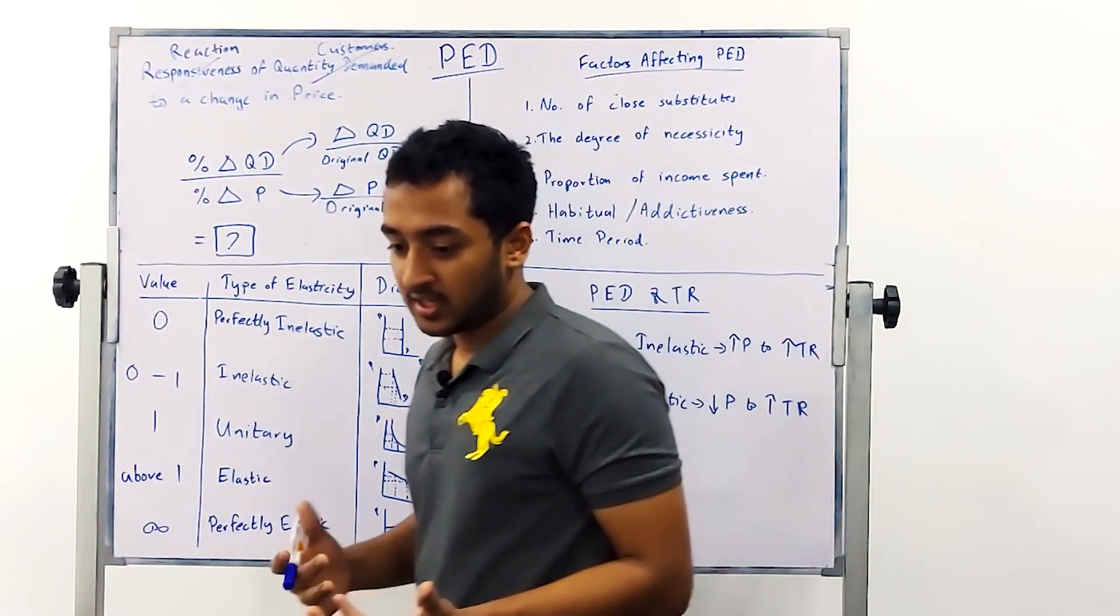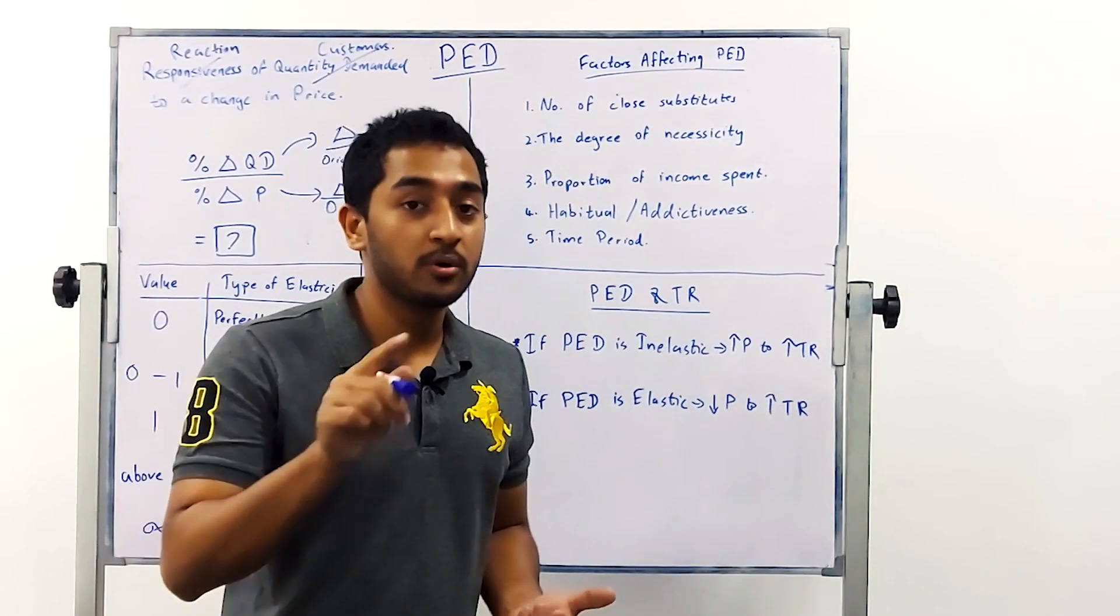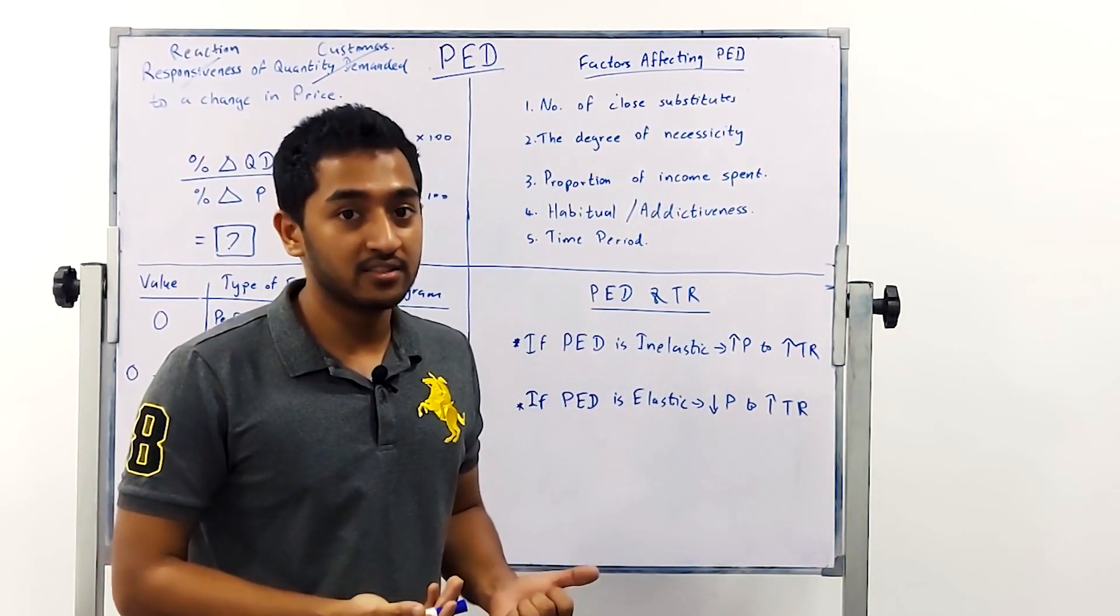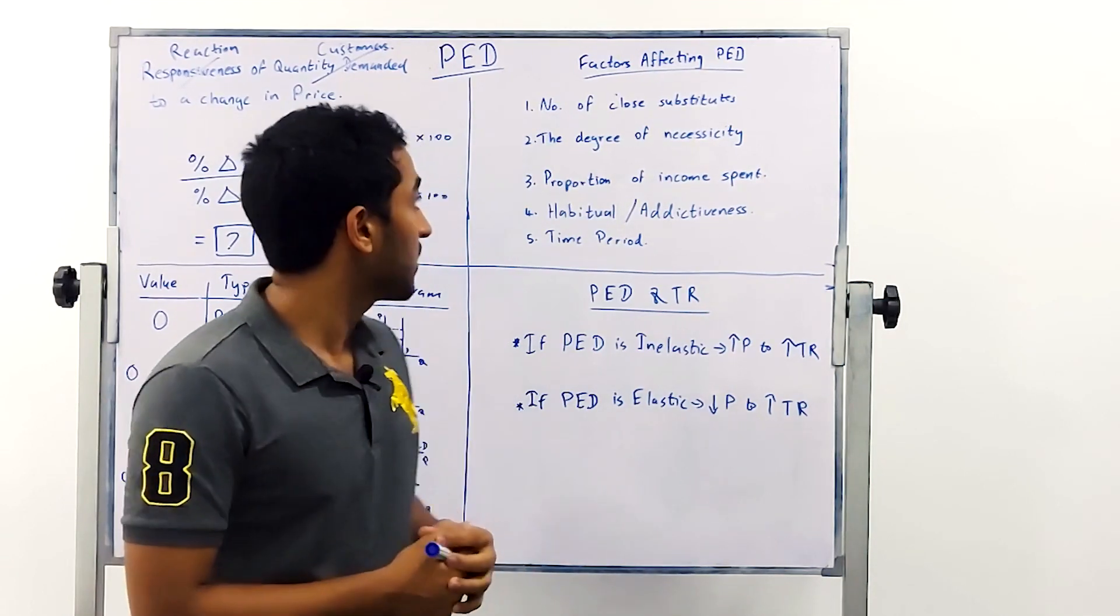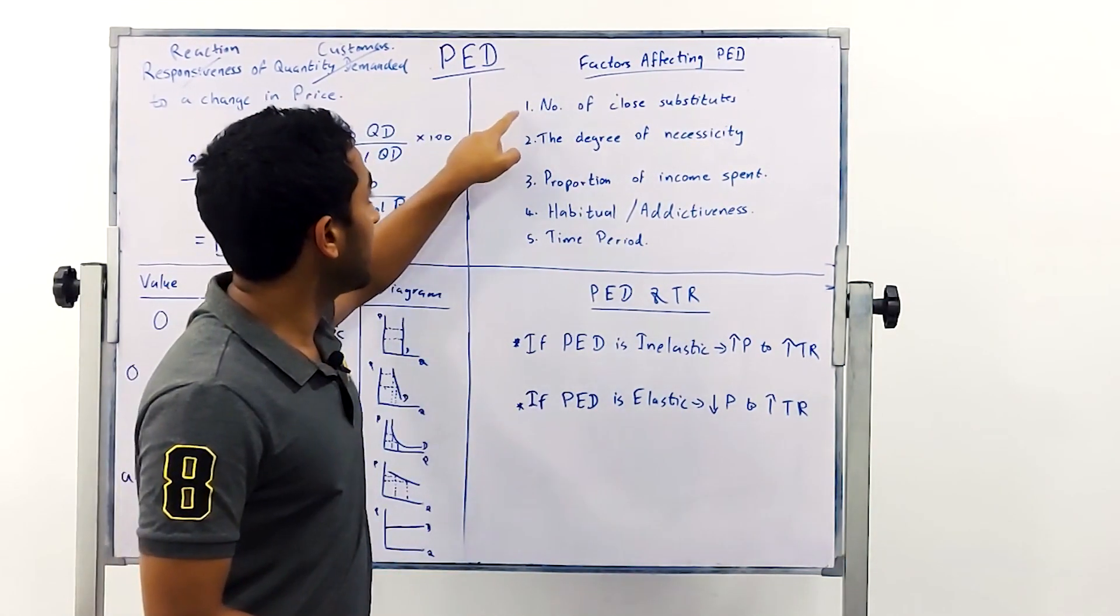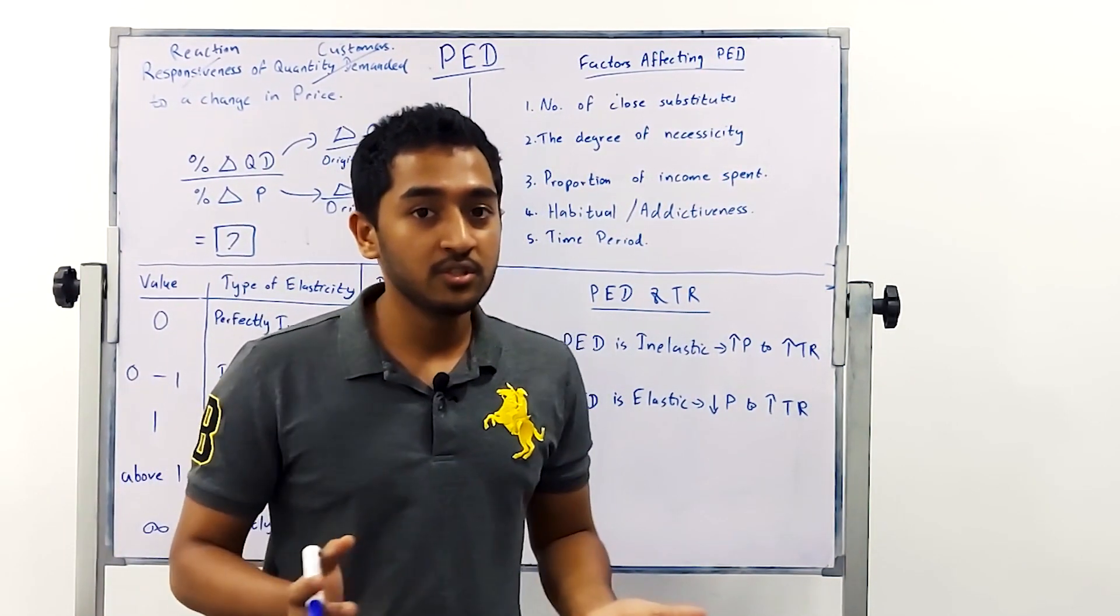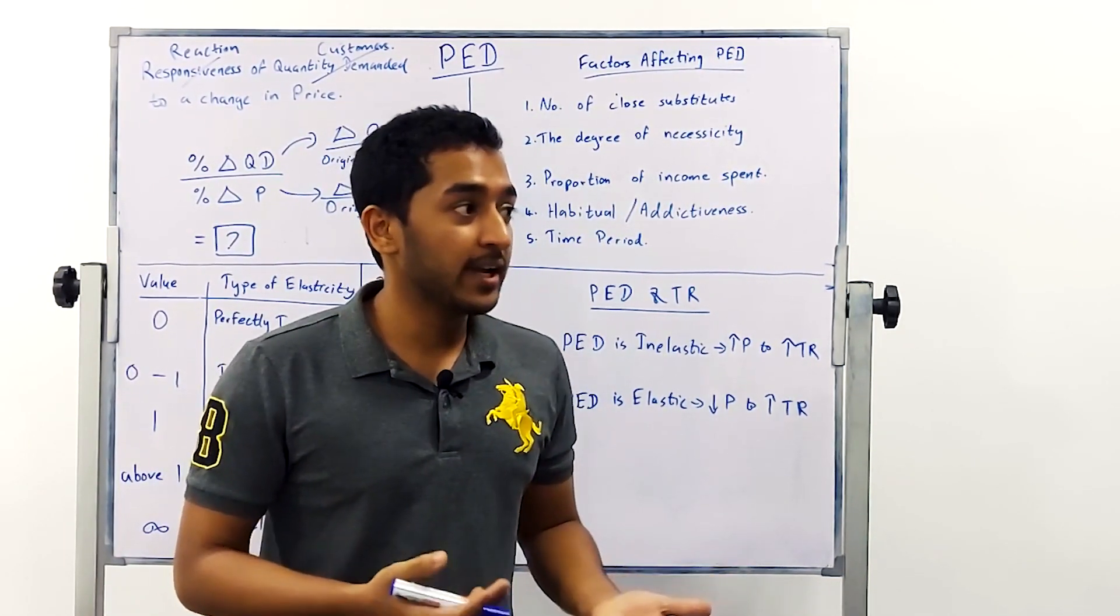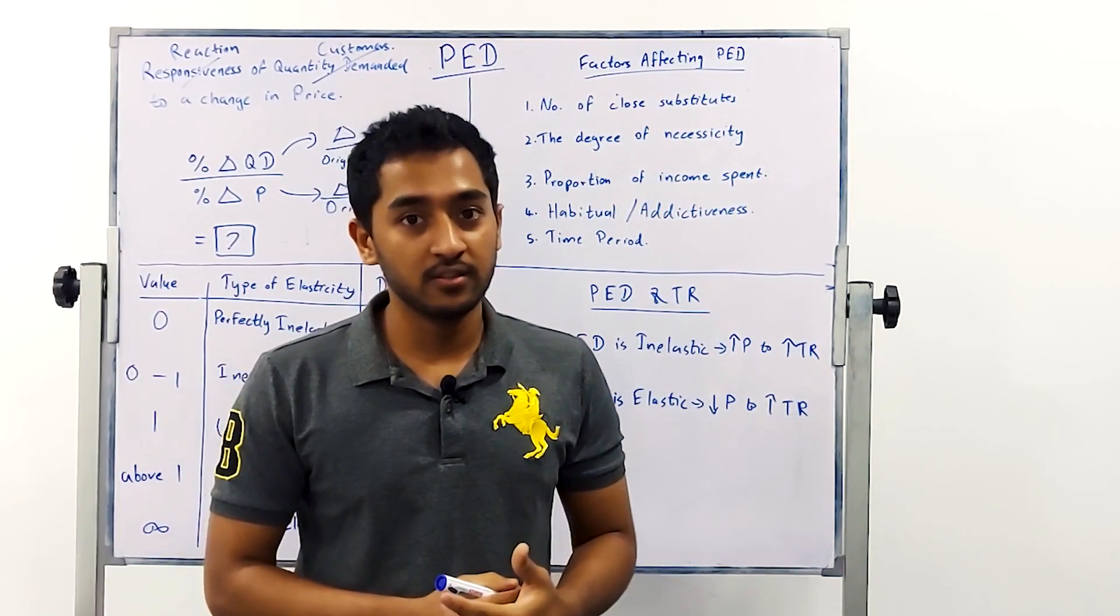Now in understanding that let's figure out what are the factors that make your product elastic or inelastic. What changes the elasticity of your product? Now if your first factor is a number of close substitutes. If your product has many substitutes you are more likely to be elastic because people will switch to a different product if they see your prices rise.